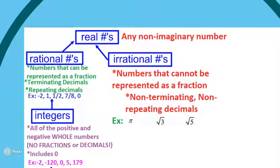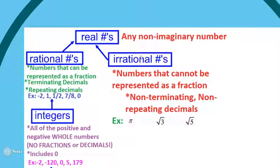Or if you get a repeating decimal that goes on forever but repeats — like 0.2222, 0.353535, or 0.22242224 — anything that repeats forever is also a rational number. Examples include negative 2, which can be written as -2/1, since any number without a visible denominator is secretly over 1. You can also have numbers like 1/2, 7/8, or even 0, written as 0/1. All of these are rational numbers.